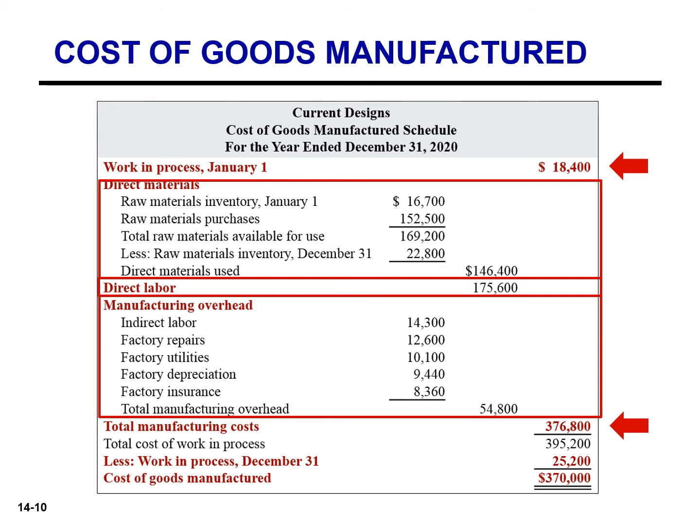We now have two cost amounts: the cost of the beginning work in process and the total manufacturing production costs for the current period. The sum of these costs is the total cost of work in process for the year.